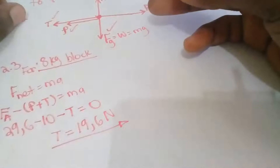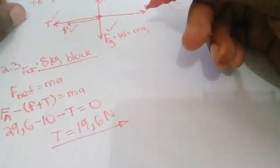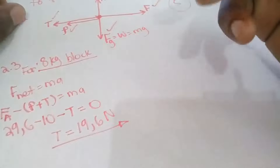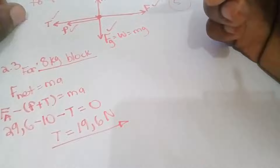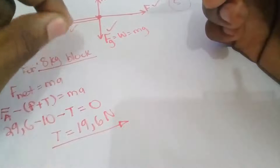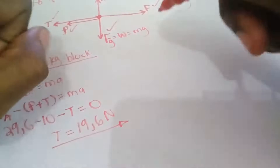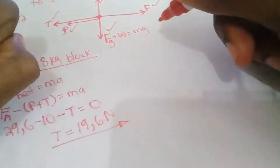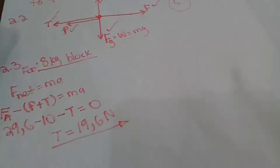I used the 8 kg block for that calculation. You can also use option two - the 2 kg block - because it is also experiencing a tension force, since the rope connects the 2 kg block to the 8 kg block. Now let's move to Question 2.4.